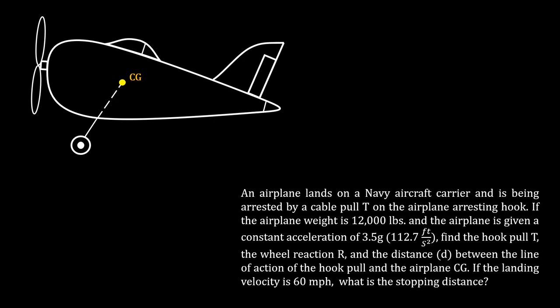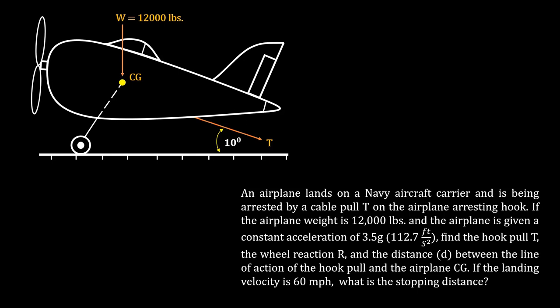An airplane lands on a Navy aircraft carrier and is being arrested by a cable pull T on the airplane's arresting hook. If the airplane weight is 12,000 pounds and the airplane is given a constant acceleration of 3.5G or 112.7 feet per second squared, find the hook pull T, the wheel reaction R, and the distance D between the line of action of the hook pull and the airplane center of gravity.